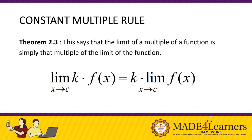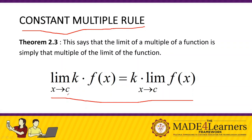Theorem number three: the Constant Multiple Rule. This says that the limit of a multiple of a function is simply the multiple of the limit of that function. Symbolically: the limit of k · f(x) as x approaches c equals k times the limit of f(x) as x approaches c. Notice that k is simply factored out of the limit.